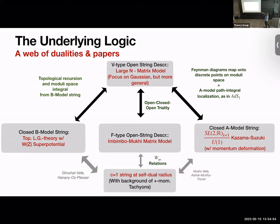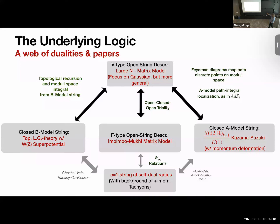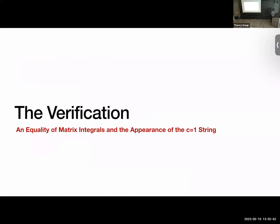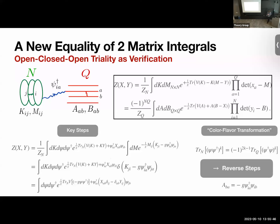The main idea is that we use topological recursion — a classic tool in matrix models — and understand that it's secretly a B-model string in disguise. On the A-model side, we use the Strebel parametrization to directly map each Feynman diagram onto a point on the moduli space, and then understand that this theory mostly due to work by Okounkov localizes to those particular points. This gives an explanation for why these two theories must appear.